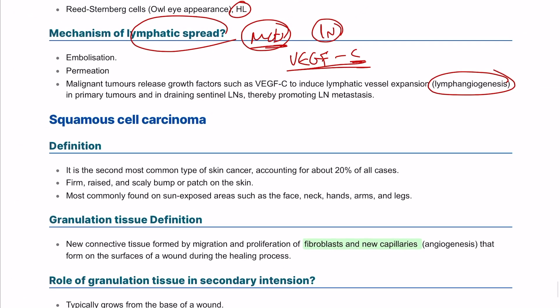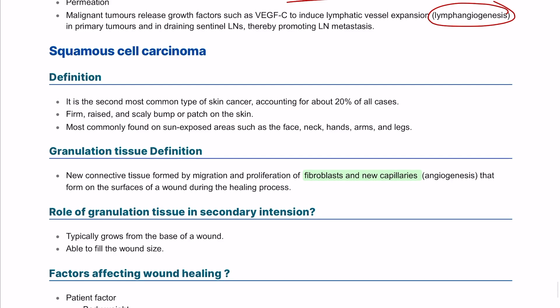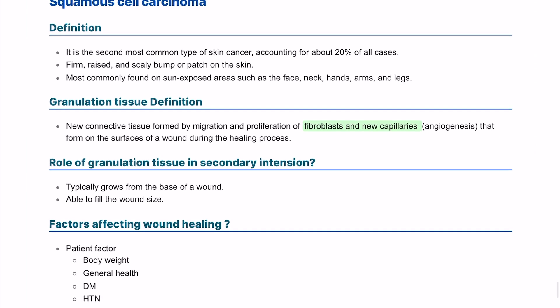Squamous cell carcinoma is the second most common skin cancer, representing about 20% of cases. It is usually firm and occurs in sun-exposed areas, specifically the upper lip of the patient. Granulation tissue is composed of fibroblasts and new capillaries formed at a wound site when it heals by secondary intention.